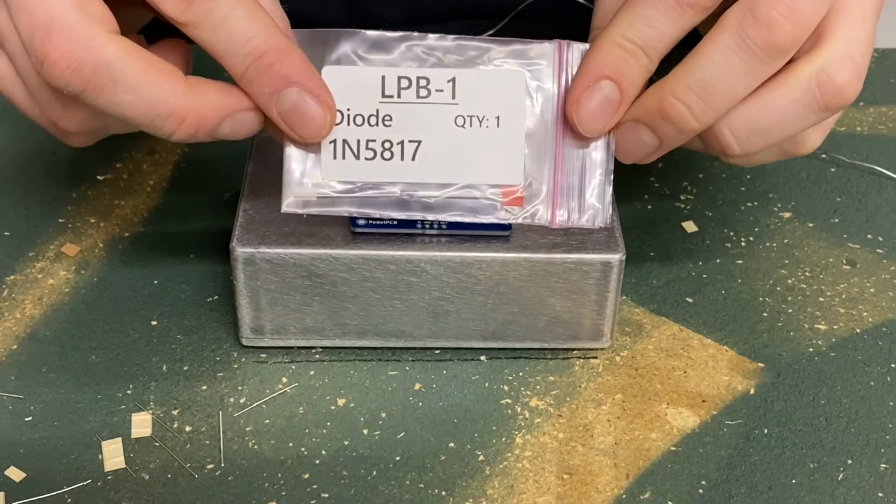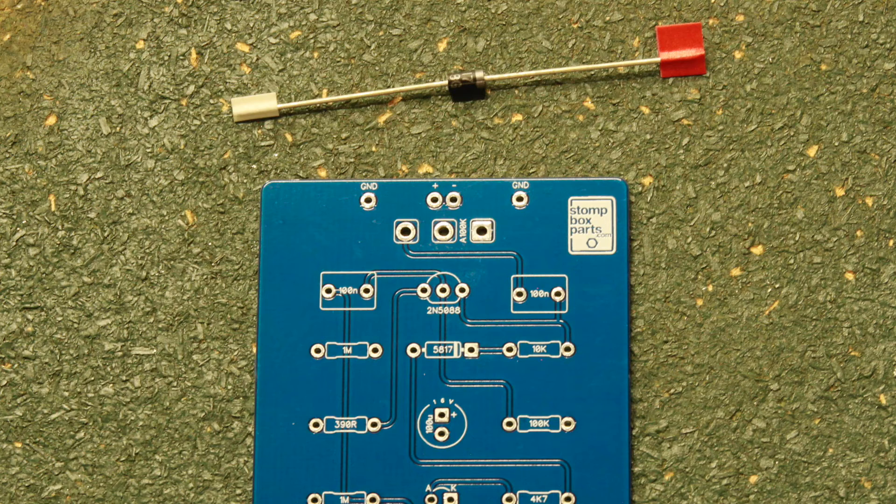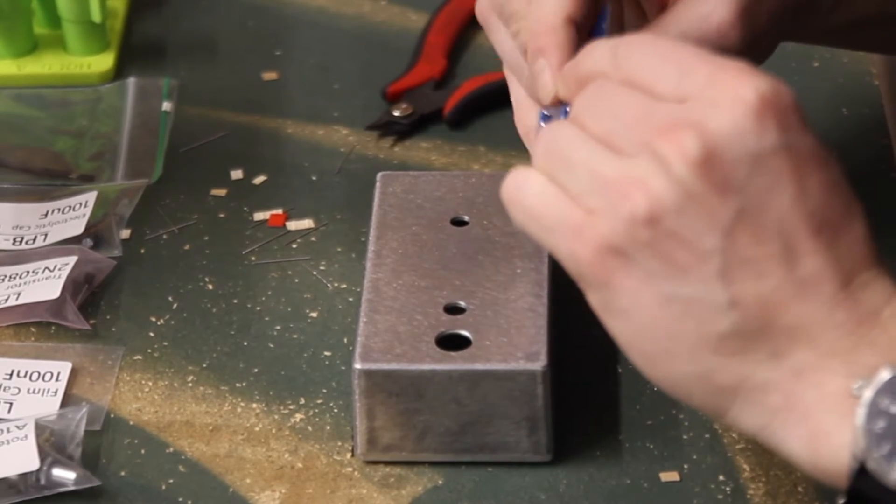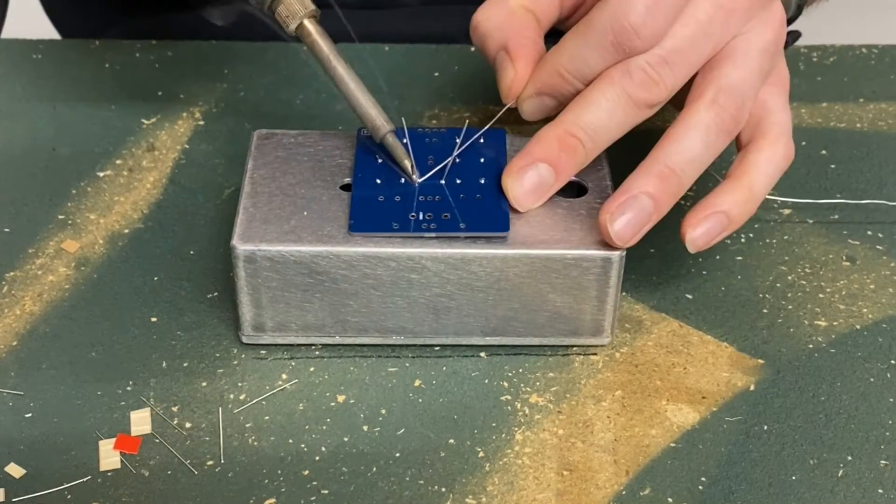Now, find your 1N5817 diode. Diodes have polarity, so line up the side with the band to the side with the line on the PCB. If you solder this in backwards, the pedal will not turn on. Load the diode into the board, double check the polarity, and solder it in just like the resistors.